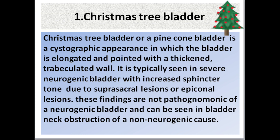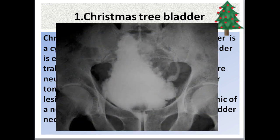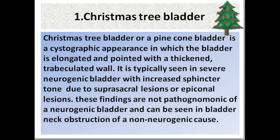Number 1: Christmas tree bladder, or pine cone bladder. It is a cystographic appearance in which the bladder is elongated and pointed with a trabeculated wall. It is typically seen in severe neurogenic bladder with increased sphincter tone due to suprasacral or epiconal lesions. These findings are not pathognomonic of a neurogenic bladder and can be seen in bladder neck obstruction of a non-neurogenic cause.